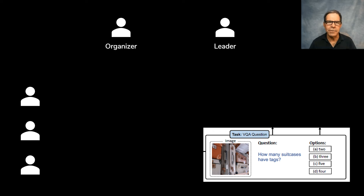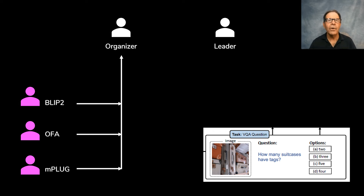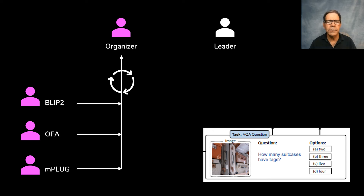In this example, it's an image of suitcases and the question is: how many suitcases have tags? For this, the authors set up a society of the mind consisting of five members — a large language model that acts as the organizer, a large language model that acts as a leader, plus three different visual language models: one using Blip2, one using OFA, and one using MPlug.